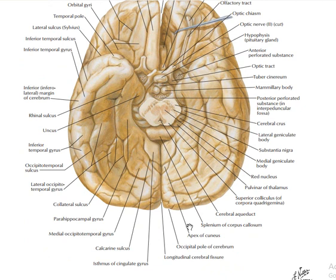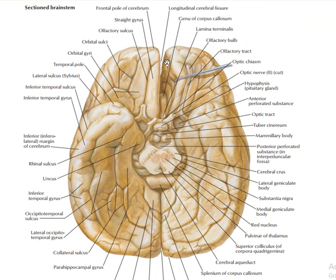The fornix also has different parts, just like the corpus callosum. The fornix has three main parts: the first part is called the column, the second part is called the body, and the last part is called the crus, because they are separated into left and right.